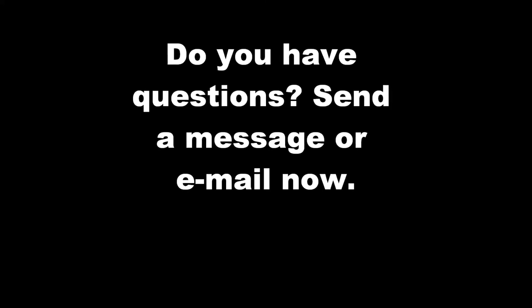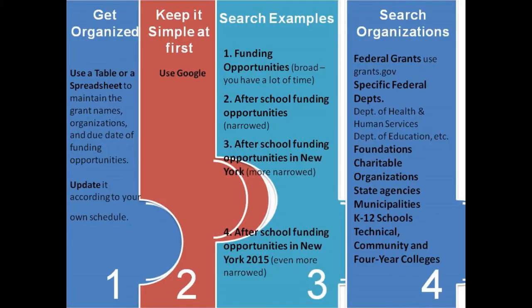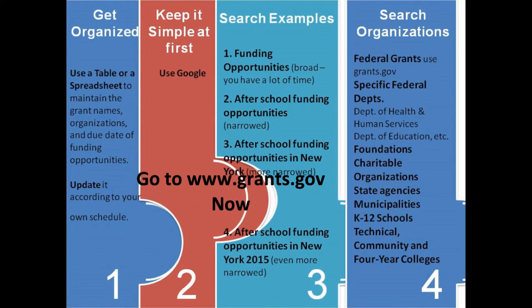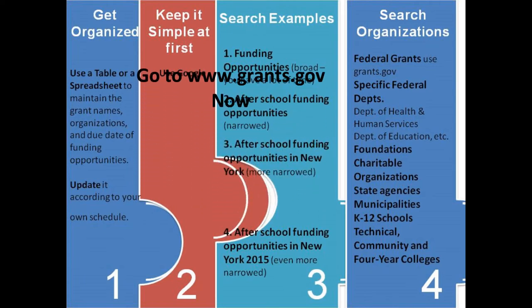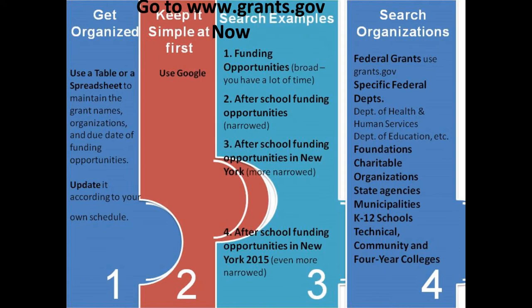You can also go to grants.gov. In grants.gov, in the top right corner, you can search by keywords, or you can go to the left side of the screen and search for open grant opportunities. You can browse the different categories and the newest opportunities.